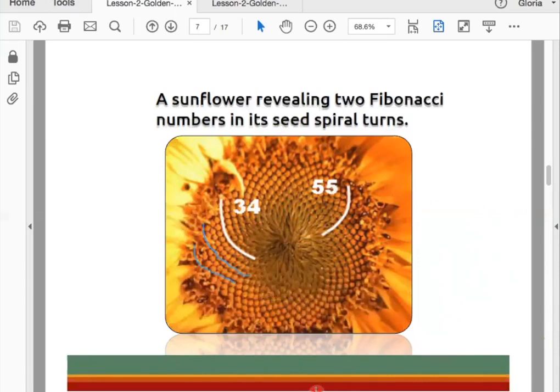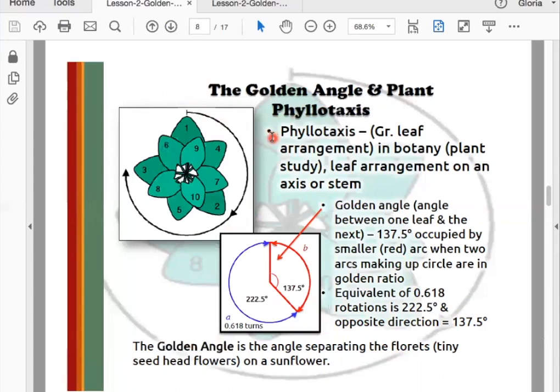Okay, so let's talk about the golden angle and plant phyllotaxis. The word phyllotaxis is Greek for leaf arrangement. In botany or plant study, the leaf arrangement is on an axis or stem. The golden angle, the angle between one leaf and the next, is 137.5 degrees, occupied by the smaller red arc. When two arcs make up a circle, they're in the golden ratio and they're the equivalent of 0.618. Rotation is 222.5 degrees, and the opposite direction is 137.5.